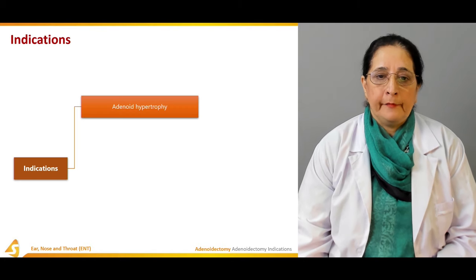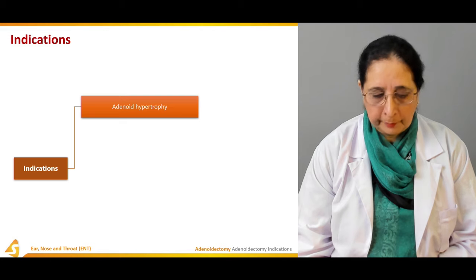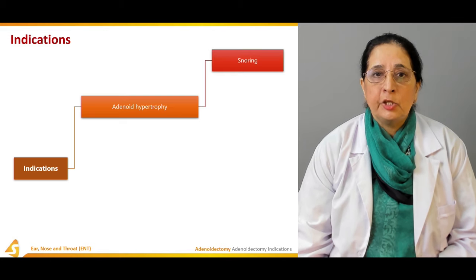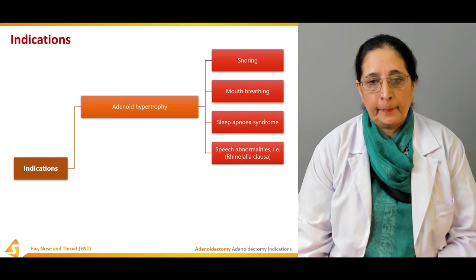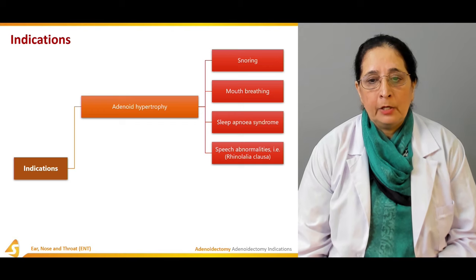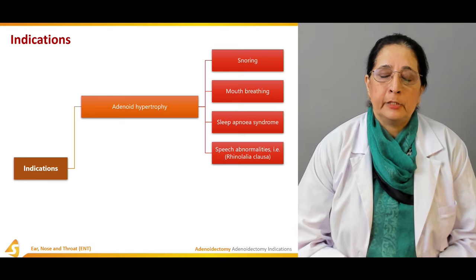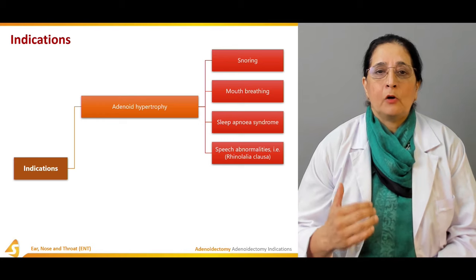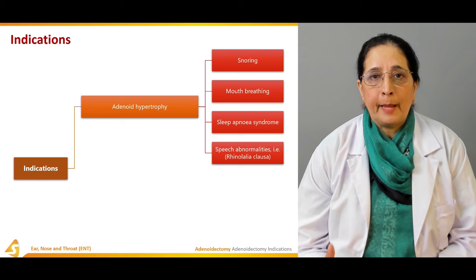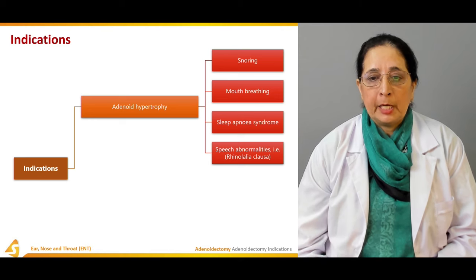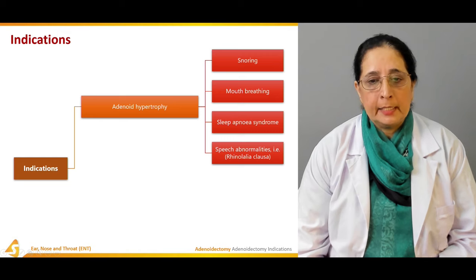Indications of adenoidectomy include hypertrophy of adenoids causing problems such as obstruction of breathing — for example snoring, mouth breathing, sleep apnea syndrome, speech abnormality, and rhinolalia clausa. These are very important indications: if the adenoids are enlarged and causing the patient to snore, breathe from the mouth, experience sleep apnea, or develop speech abnormalities, these are all indications for adenoidectomy.